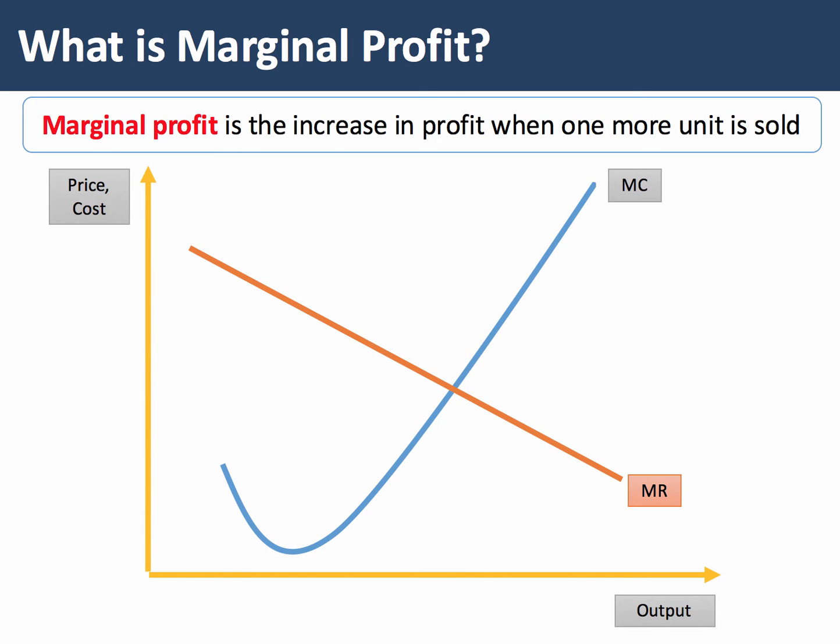Marginal profit is the increase in a firm's total profits when one more unit of output is produced and then sold in a market. The key to understanding marginal profit is to think about the marginal revenue — the revenue from the next unit sold — and the marginal cost, the cost of the next unit sold.